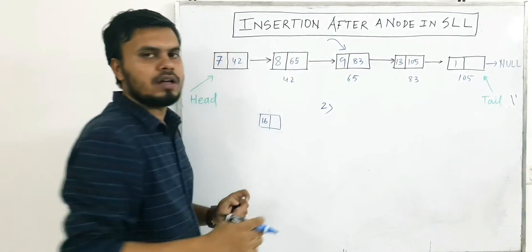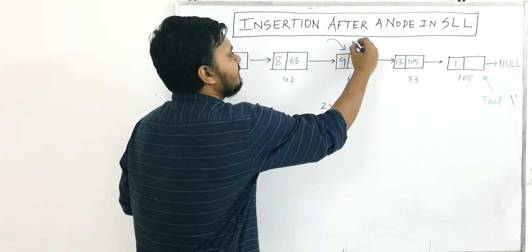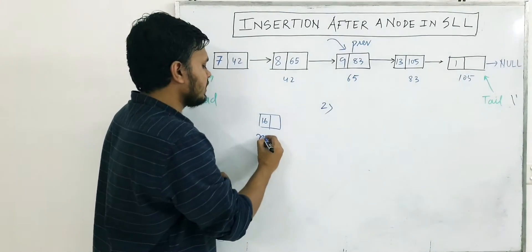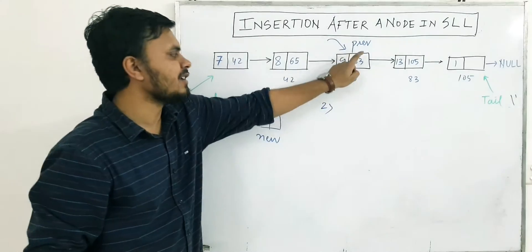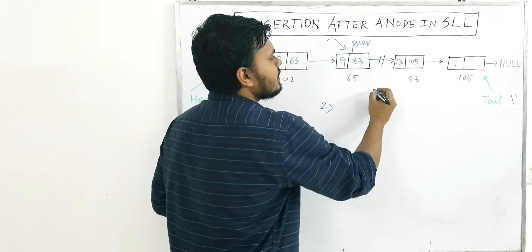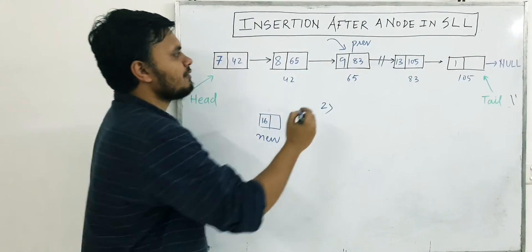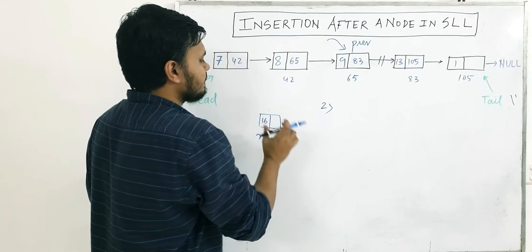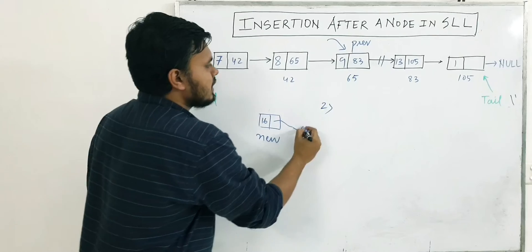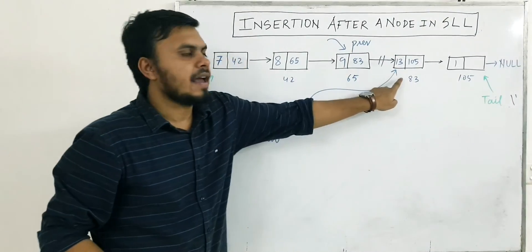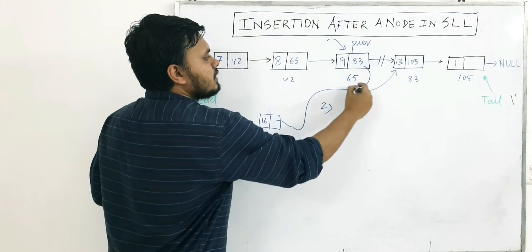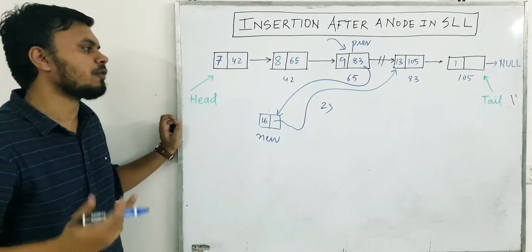Step two, after finding the node, let's call this the previous node, because after this we're going to insert the new node. So this is 'previous' and this is 'new'. What we have to do is rewire this connection — we have to make sure that the next pointer of the previous node starts pointing towards the new node.